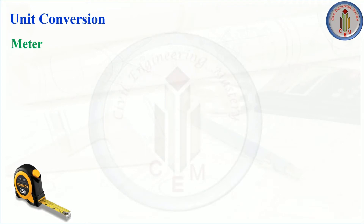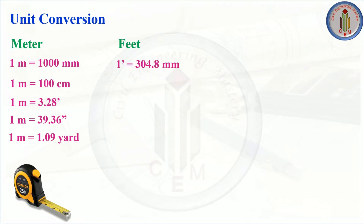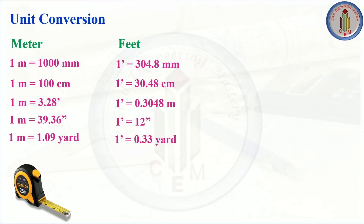1 meter equals 1000 mm, 100 cm, 3.28 feet, 39.36 inches, and 1.09 yards. Since meter is bigger than all these units, when converting from meter to millimeter, centimeter, feet, inches, or yard, you multiply. For feet: 1 foot equals 304.8 mm, 30.48 cm, 0.3048 meter, 12 inches, and 0.33 yard.